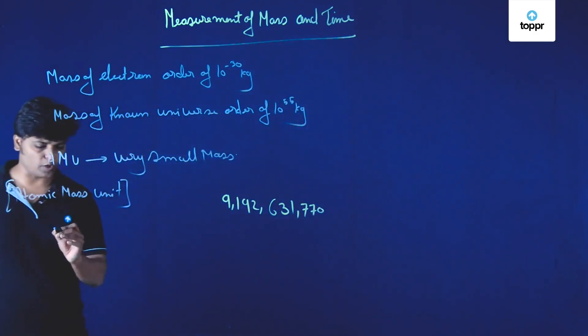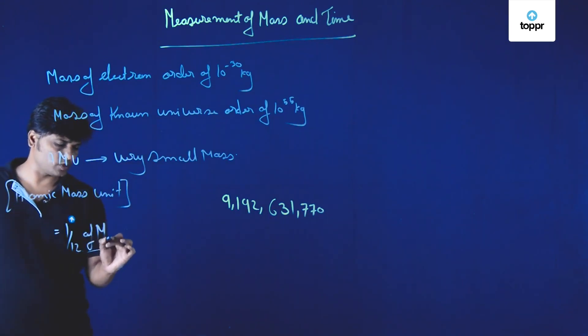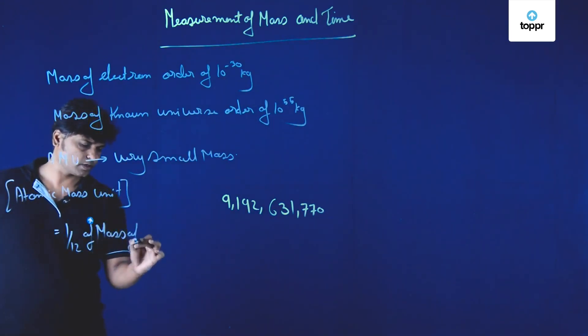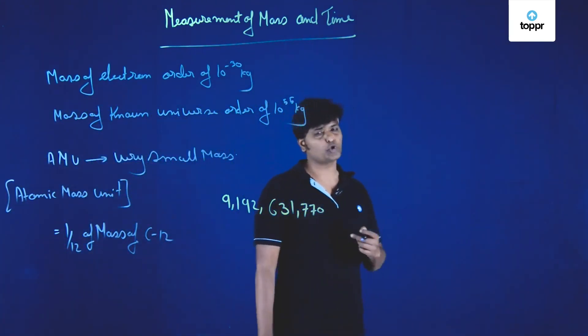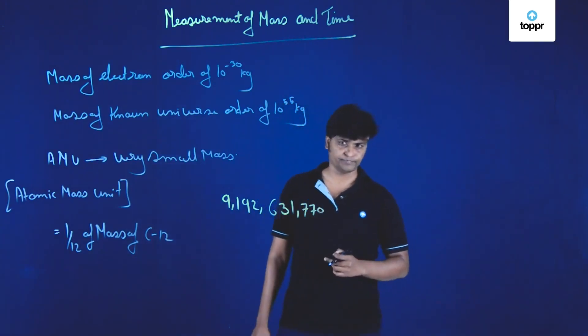It is 1 twelfth of the mass of carbon 12, C12 atom. Now what is C12? C12 is the isotope of a carbon atom.